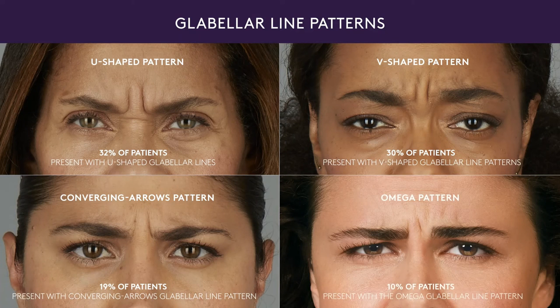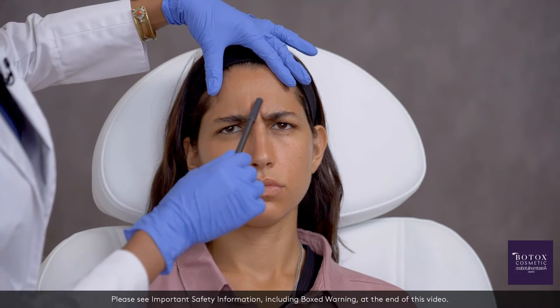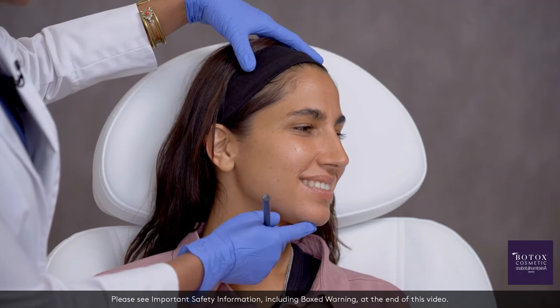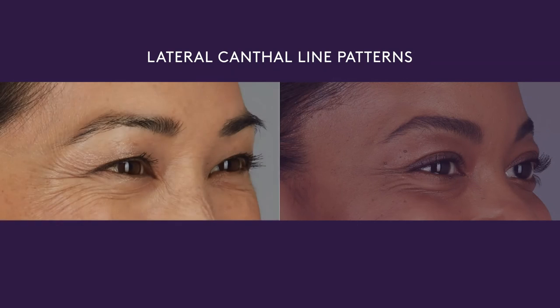There are four glabellar line patterns: U-shaped, V-shaped, converging arrow, and omega. The two most common are the U and V shapes. In Kala, go ahead and make an angry face — you can see that she has a U-shaped pattern to her glabella. Next we'd like to ask Kala to smile widely and look at her left and right profiles. Kala has a lower fan pattern in her lateral canthal lines.